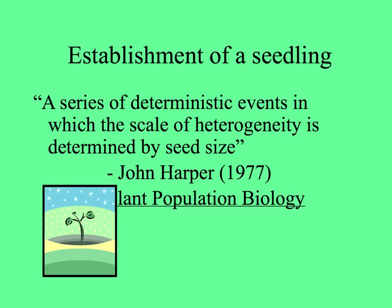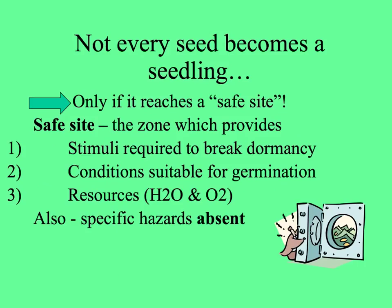John Harper, in his well-known book about plant population biology published in the late 70s, called seedling establishment a series of deterministic events in which the scale of heterogeneity is determined by seed size.